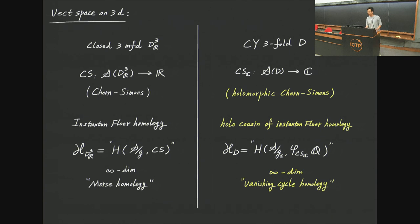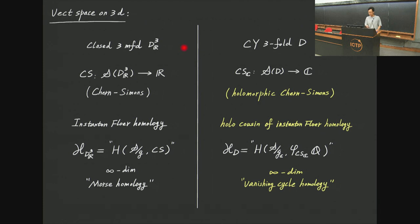Because there is a TQFT structure, let me first talk about the vector space associated to this 3D theory. In the real case, we start with oriented closed real three-manifolds D, and there is a Chern-Simons functional on the space of all connections. We can consider the so-called instanton Floer homology, which is roughly the infinite-dimensional Morse homology of this Chern-Simons functional.